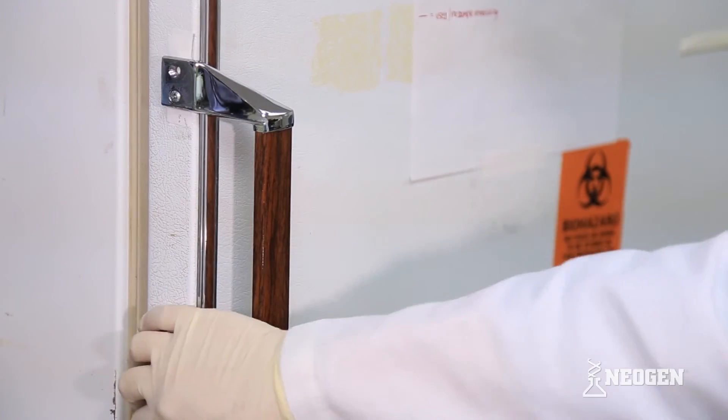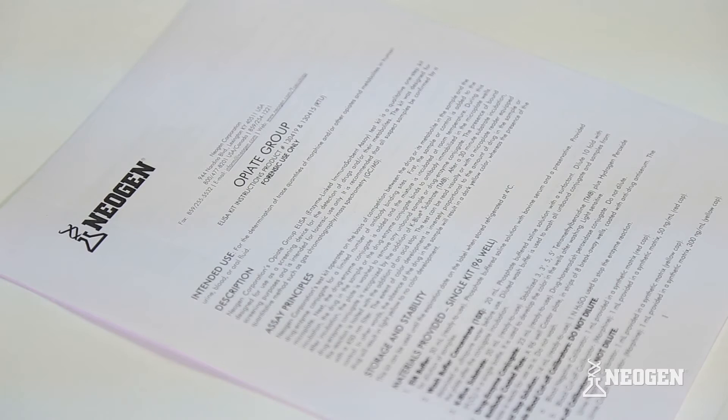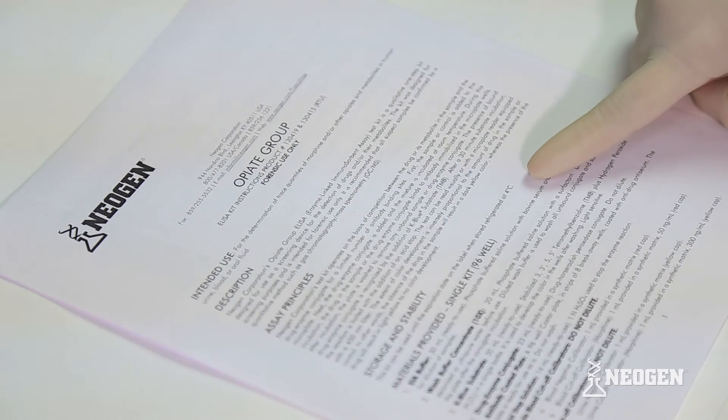Unused kit materials must be stored at 4 degrees Celsius to ensure their stability. Some kit components may require different storage temperatures, so be careful to check the kit insert for storage conditions.